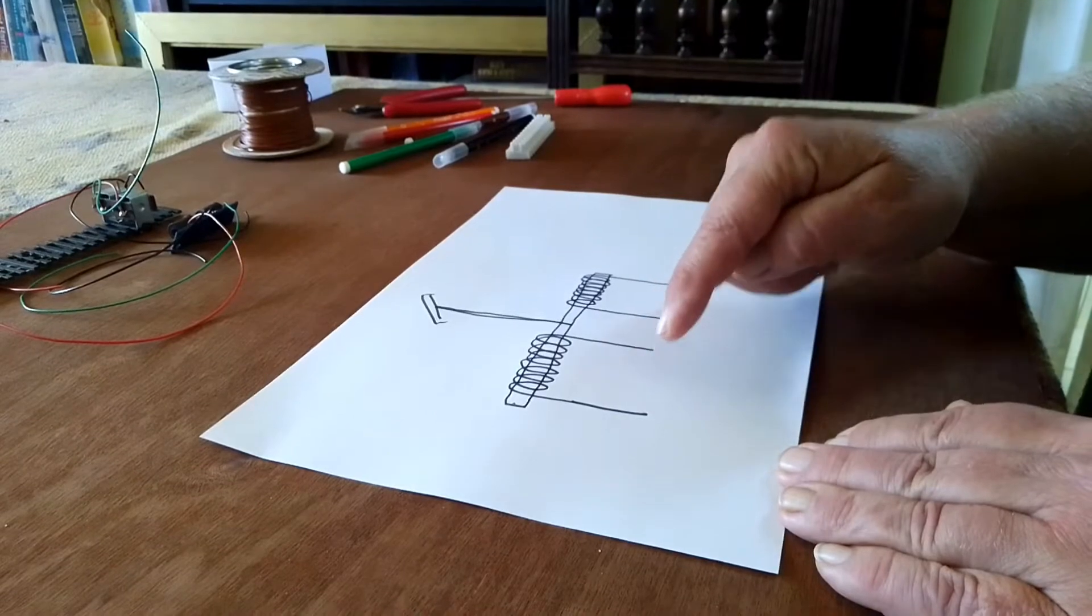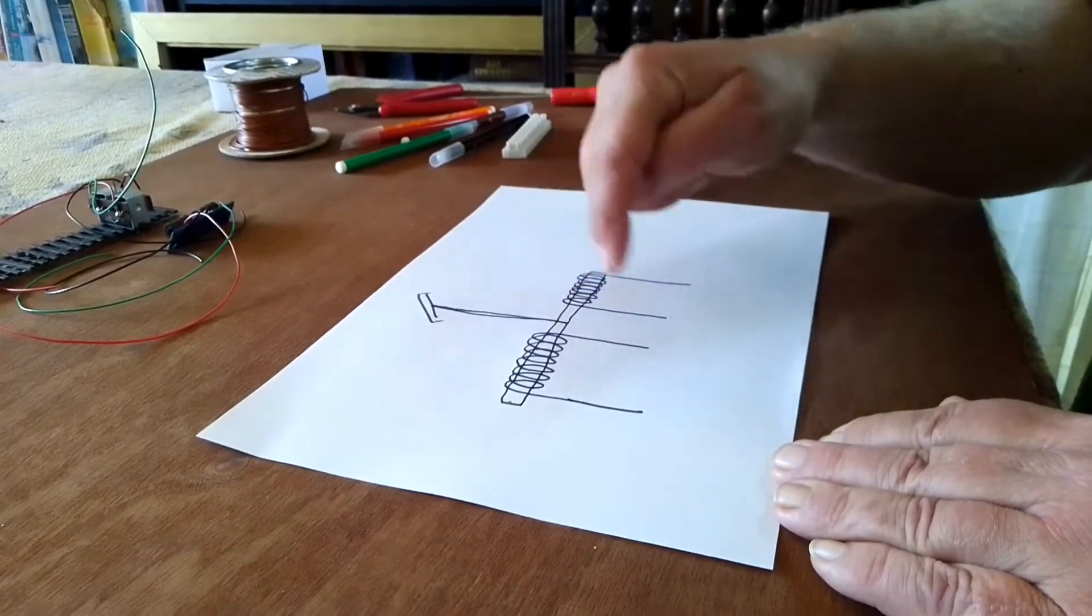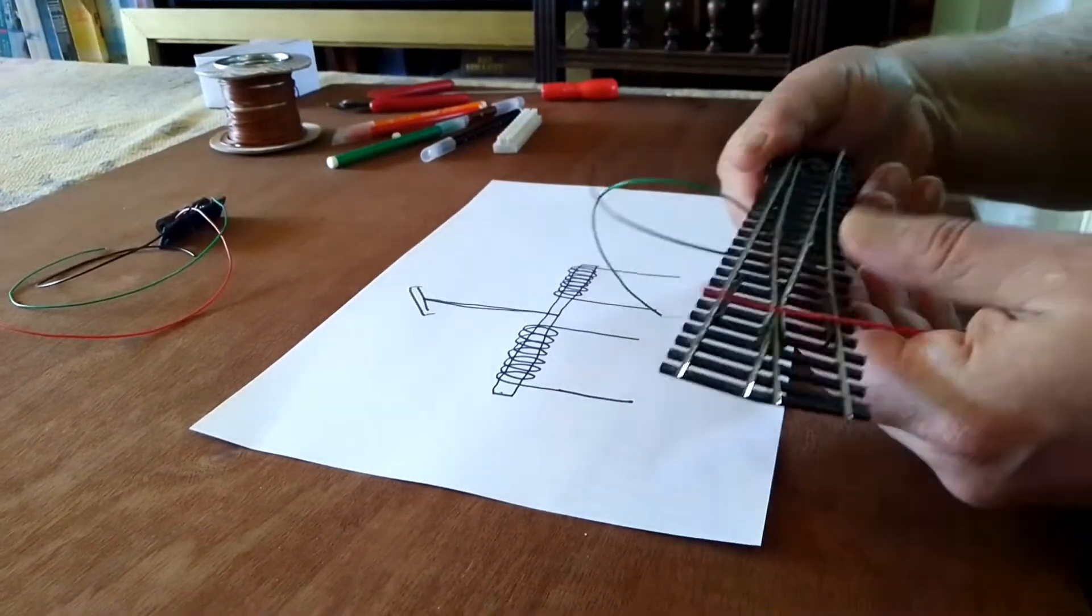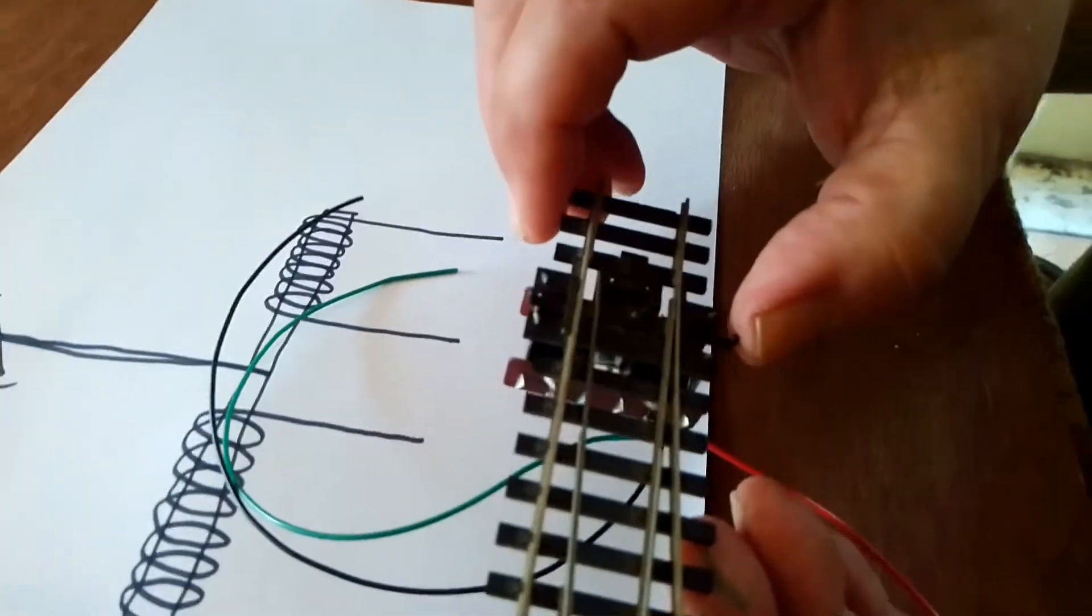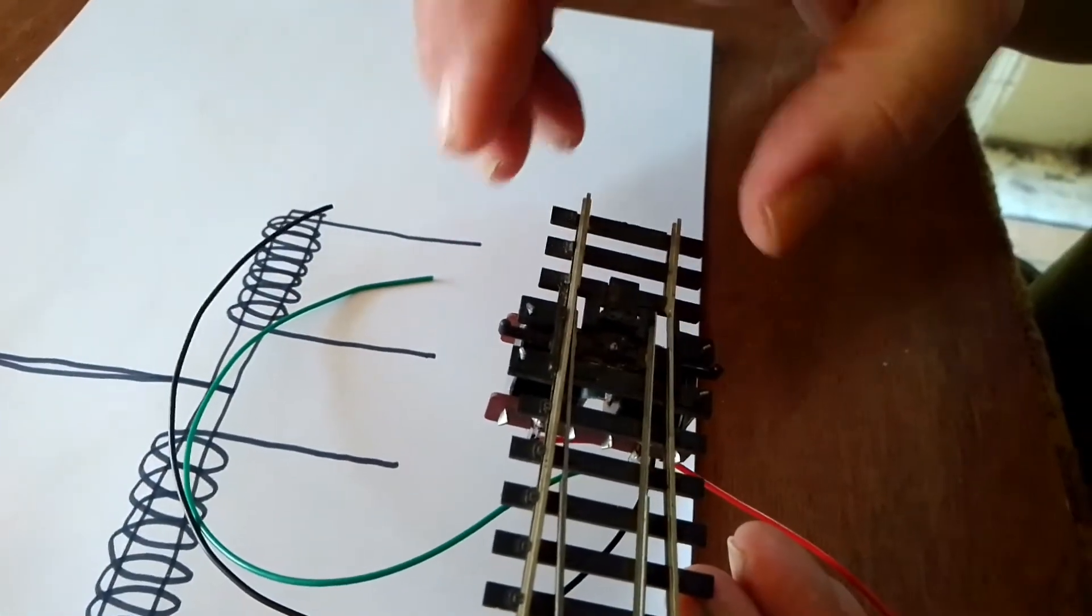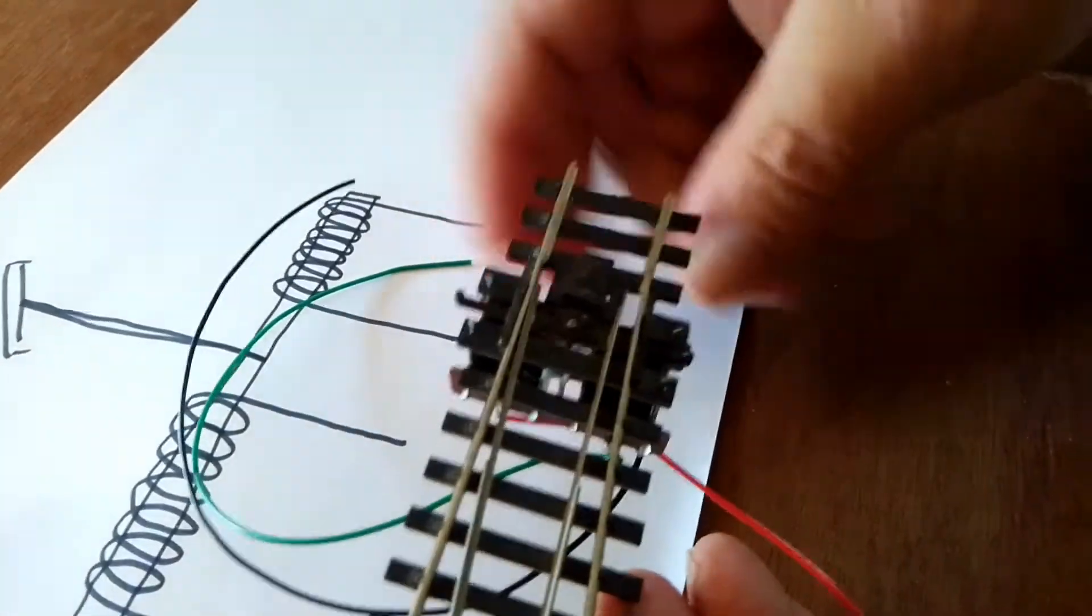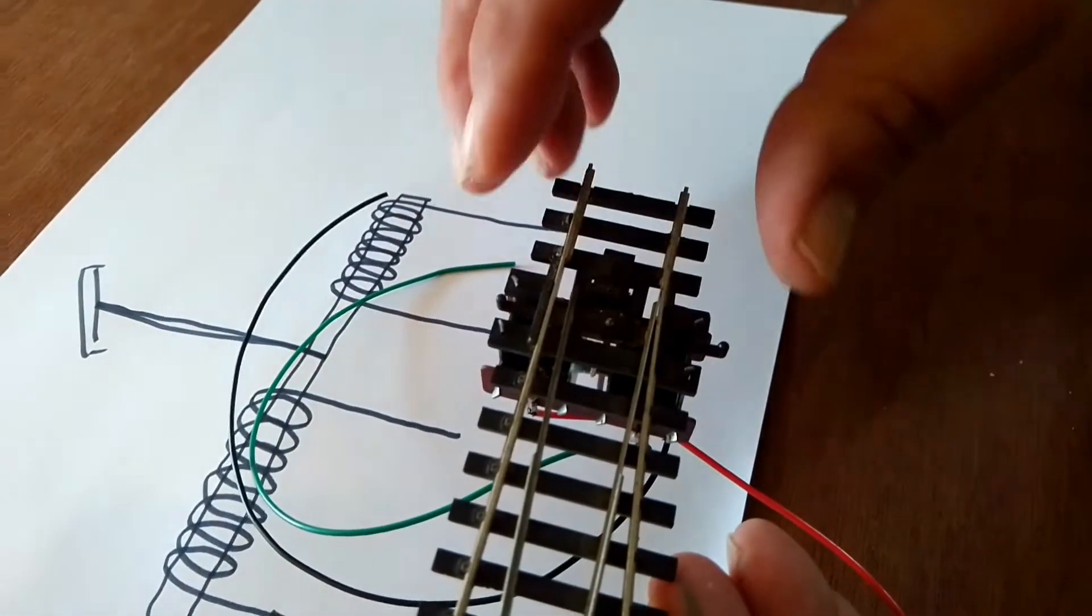So when the point motor is operated, it has to just have a half second pulse of electricity through it and that's plenty to move it across. To hold it in place, Peco put a little spring in the point. So when you press it across, the spring holds it in place. A pulse of electricity down two wires pulls it across and the spring holds it in place.